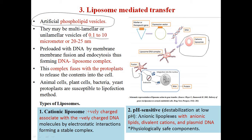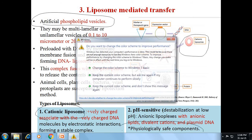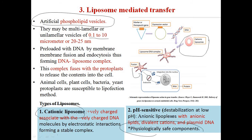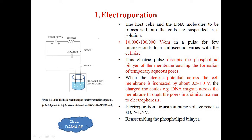Animal cells, plant cells, and bacteria as protoplasts are easily transformed by the lipofection method. Depending upon the charge, the liposomes are either cationic having positively charged lipids, or anionic — also called pH-sensitive — because they destabilize at low pH. These liposomes are physiologically safe components.